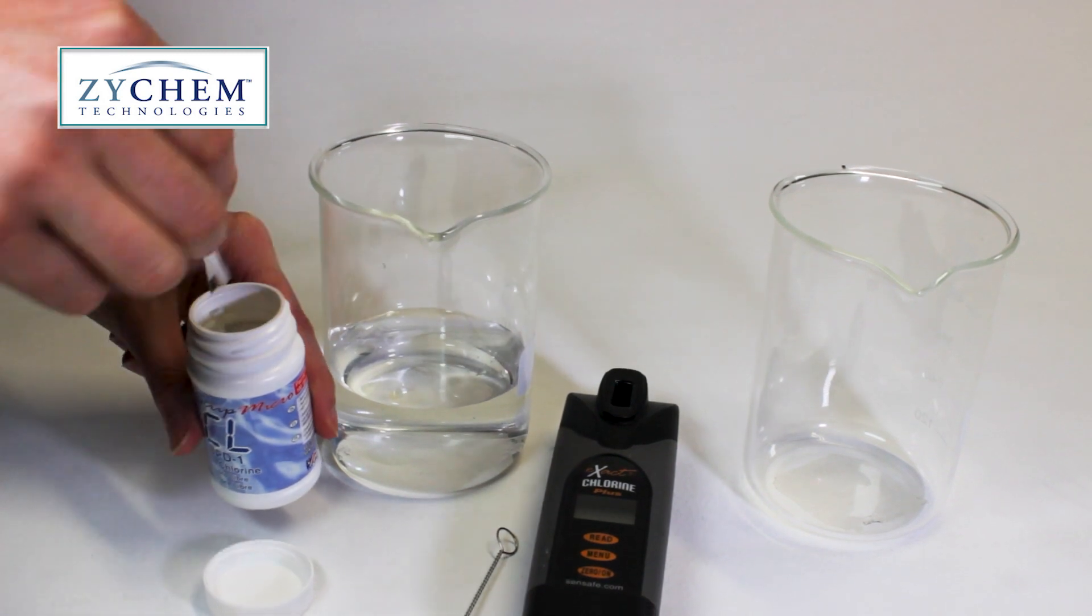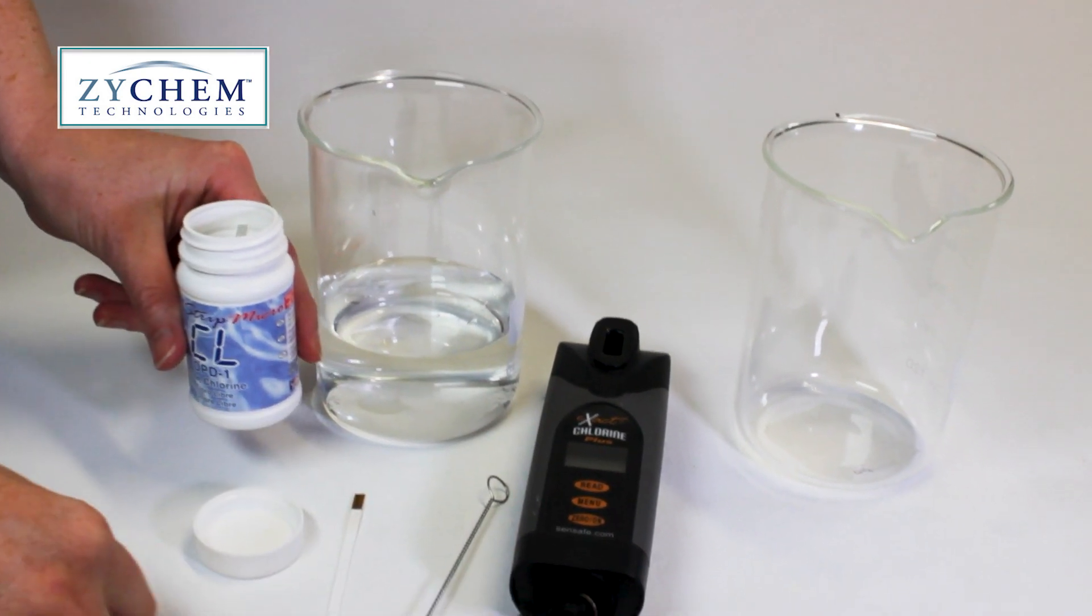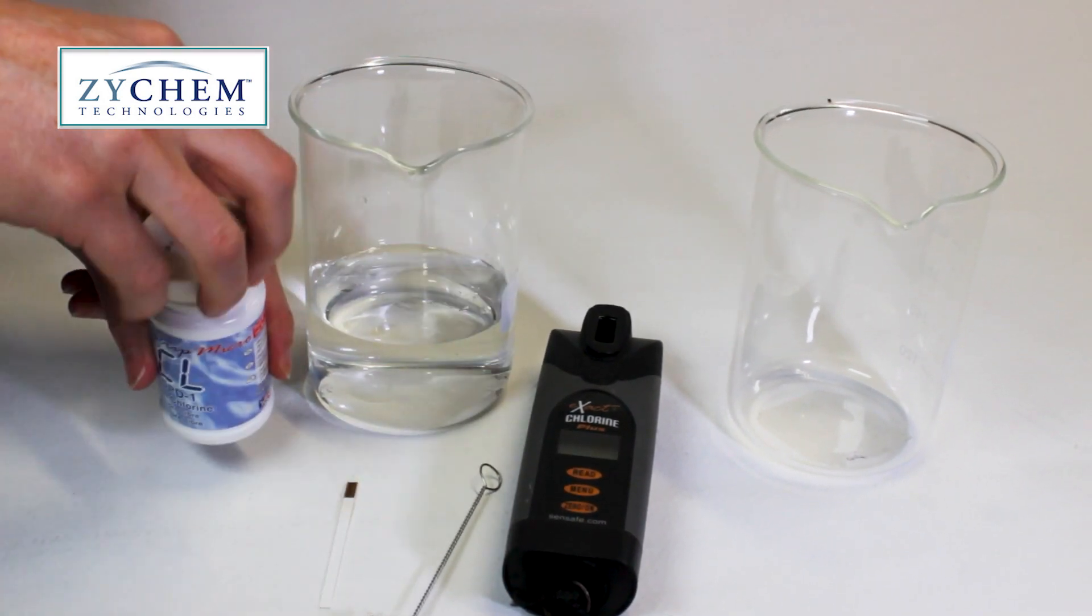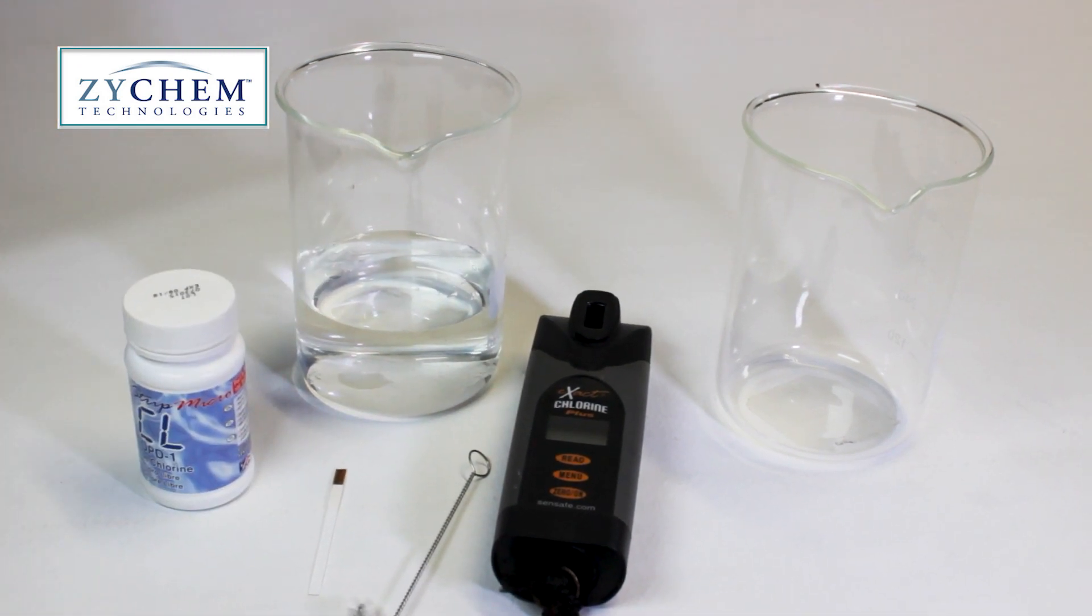First, take a DPD-1 strip out of the bottle and place it somewhere dry. Be sure to recap the bottle straight away. The test strips do best when they're kept away from light and moisture.